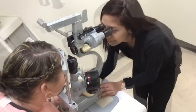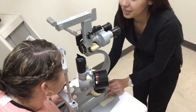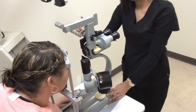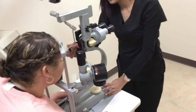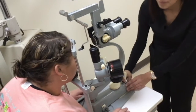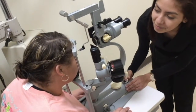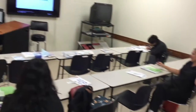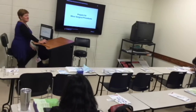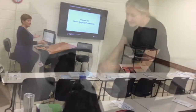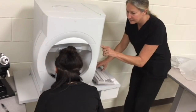Once you graduate from the program — and the program is a May to May program — you're eligible to sit for the examination and become certified as an ophthalmic assistant. There are two other levels of certification you can obtain after you've got a job and you're working.